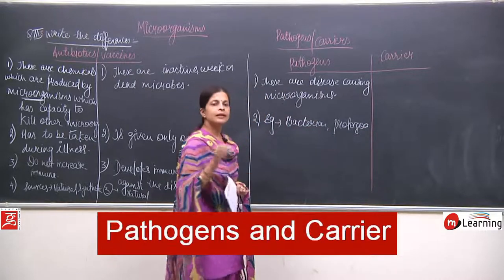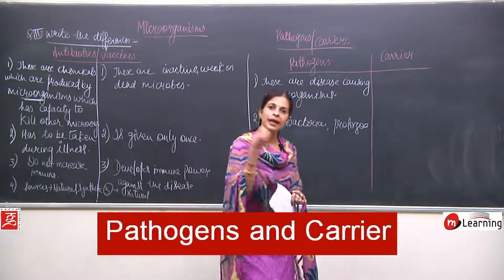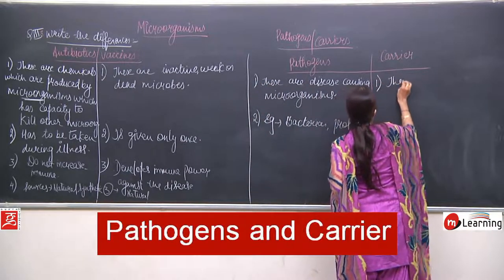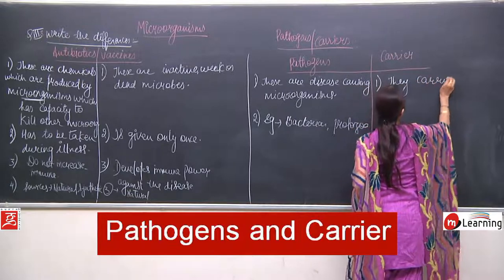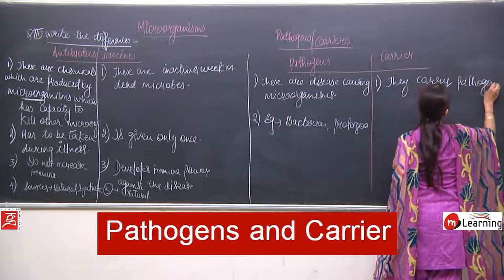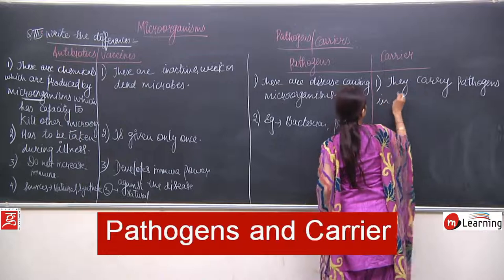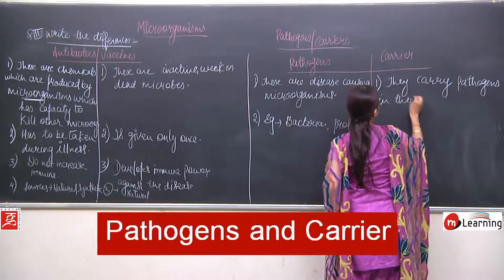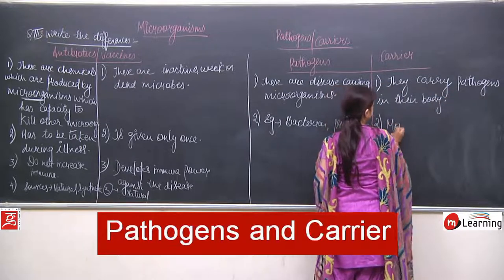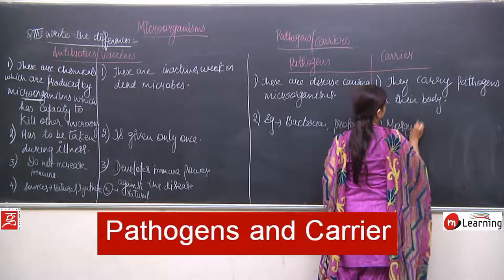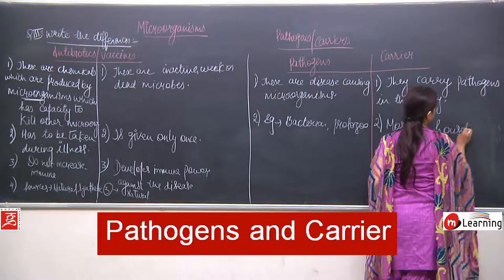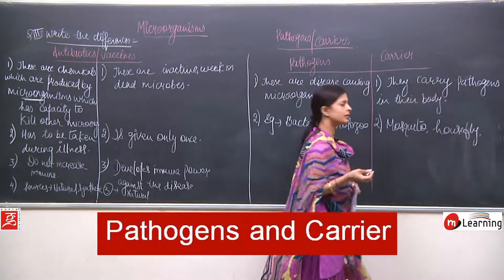Carriers are the ones which carry pathogens in their body. Examples of carriers include mosquitoes, houseflies, and rats.